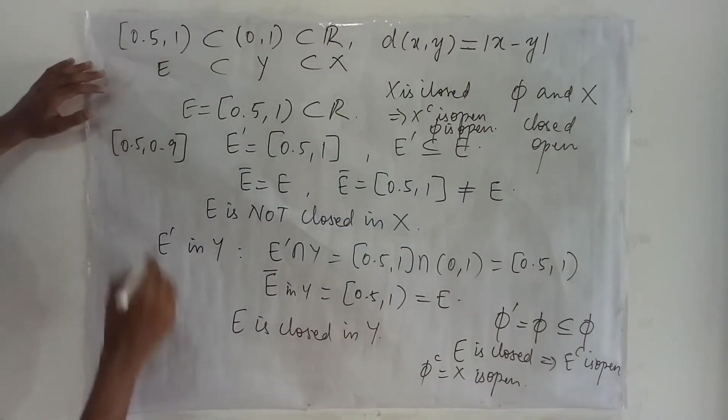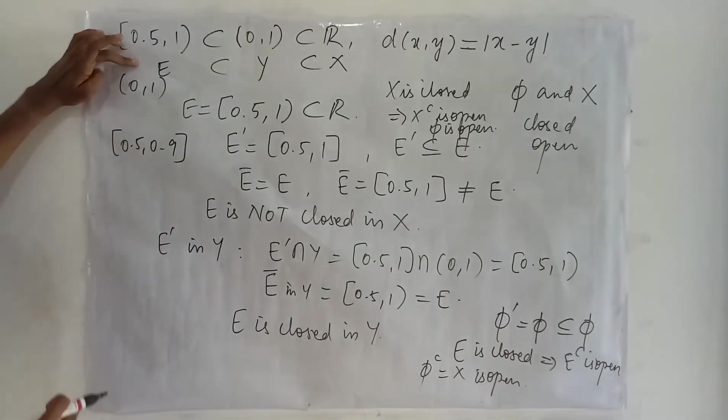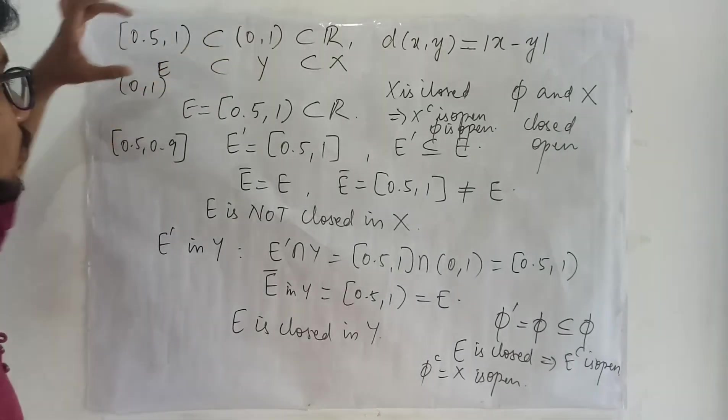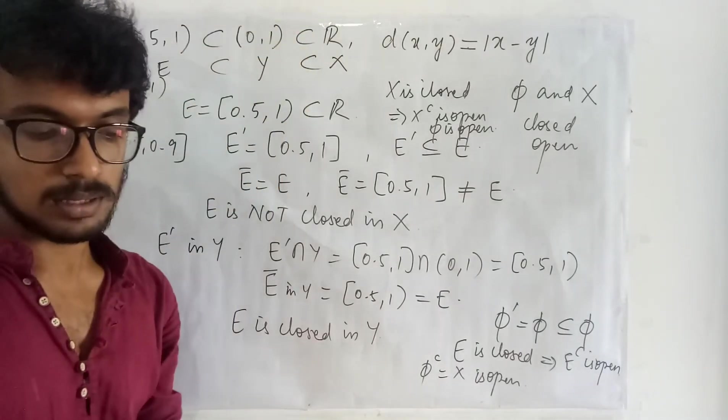With this idea you may consider [0,1] the same Y to be or E. You can see this is closed in, this is both open and closed in Y but is just open in R. It is not closed in R.